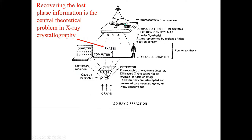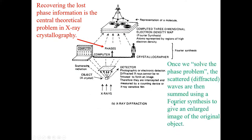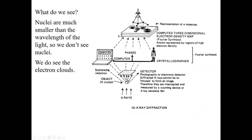Our phases, our alphas, are lost. That is the central theoretical problem in x-ray crystallography: before we can add these waves back together to get an enlarged image of the original object, we have to first recover these missing phases. Once we do recover them, we can use what's called a Fourier synthesis to add these waves back together.